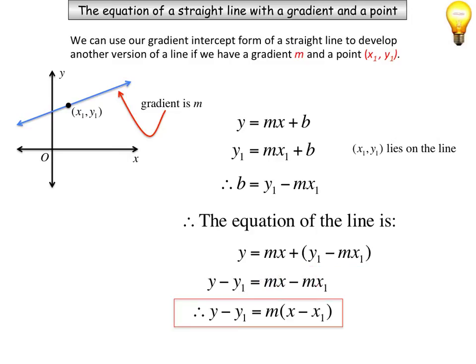And what I've got here is now a relationship of a straight line. So that's another way I can represent a straight line. This is something we need to remember. If we have a gradient and a particular point, I can substitute it into this particular equation and find out what the equation of a straight line will be.